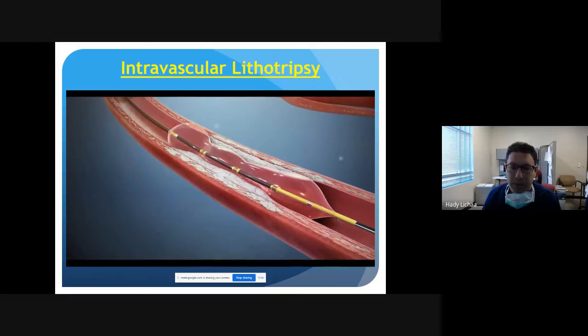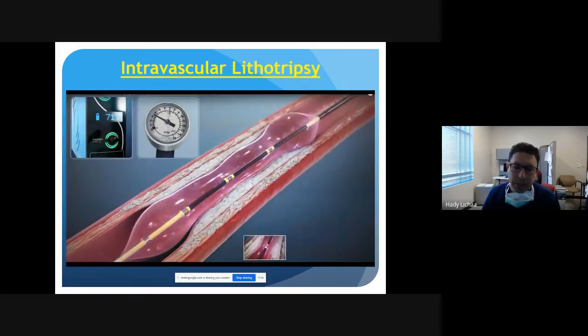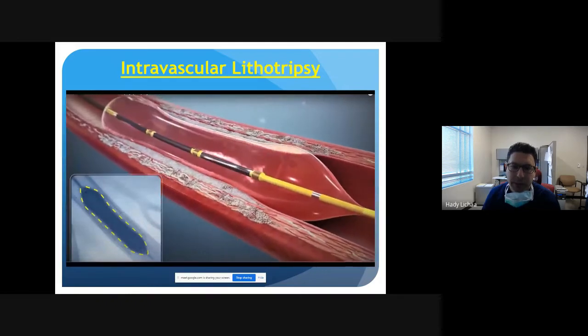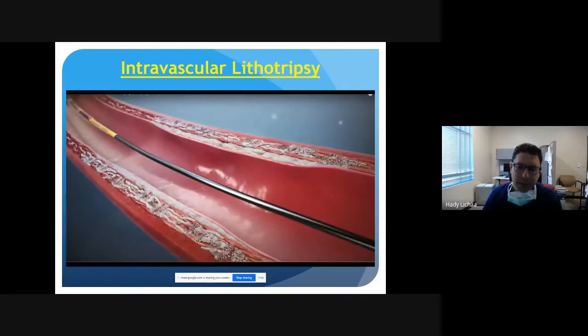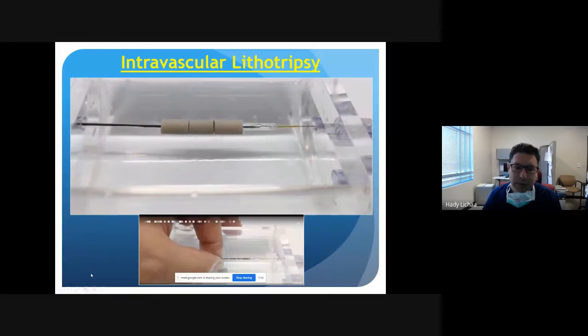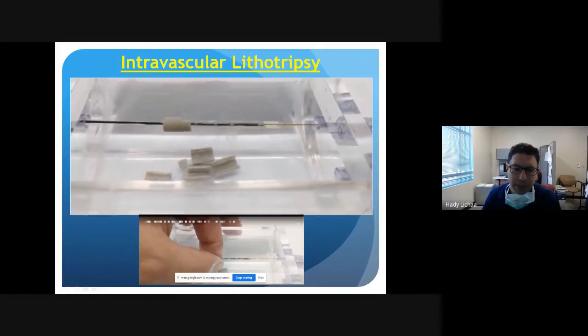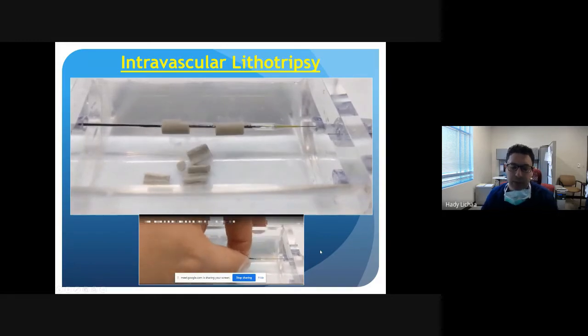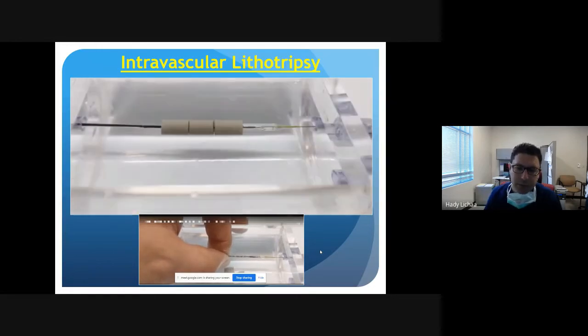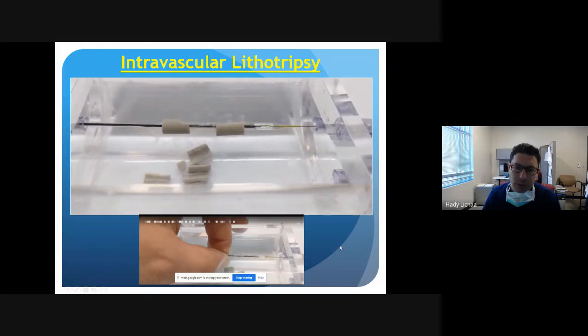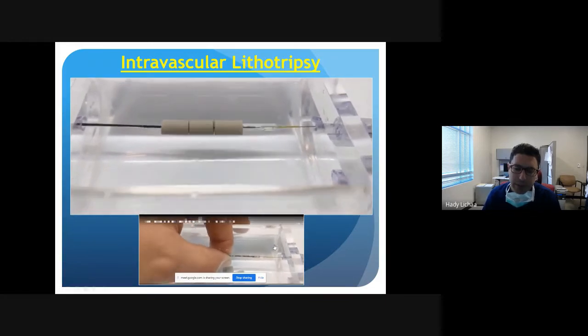The new kid on the block is intravascular lithotripsy, which we're all excited about. This is a balloon that has emitters that send sound waves through the balloon itself into the vessel wall, and as you see at two atmospheres, three atmospheres, which is extremely low pressure in the coronaries, is able to crack the calcium. This is available now in the United States in coronary and peripheral vasculature. So it does that sequentially, and it literally breaks the calcium. Someone is putting their fingers at the emitters and nothing happens, so it has differential effect on hard tissue versus soft tissue. It doesn't do anything to soft tissue, so it doesn't cause major trauma. The studies have shown zero perforations, zero embolization, and it's a very safe technology that is very promising.